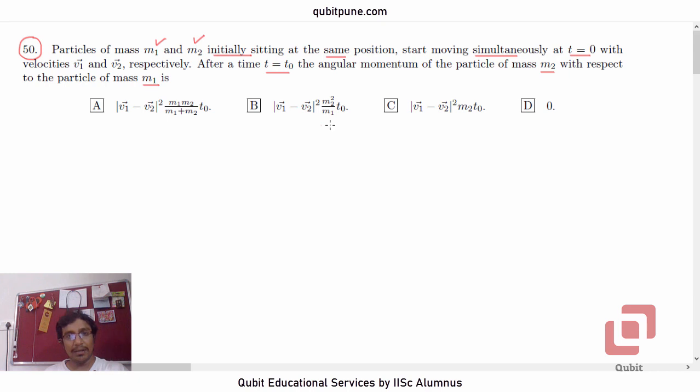And we have four options. Note that in all four options, they have only given the magnitude part, so direction is irrelevant, at least for the problem.